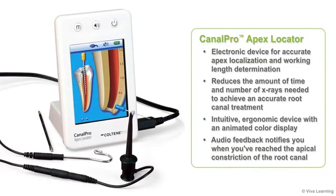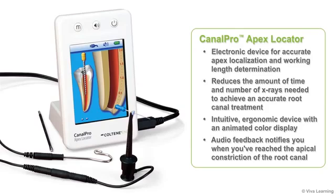In conclusion, the CanalPro Apex Locator from Coltene is an electronic device used for accurate apex localization and working length determination during root canal treatment, thereby reducing the amount of time and number of x-rays needed to achieve an accurate root canal treatment. It's an intuitive, ergonomic device with an animated color display and audio feedback that notifies you when your endodontic file reaches the apical constriction of the root canal.